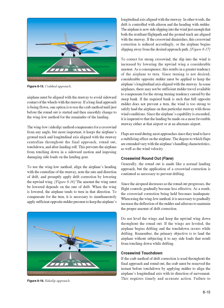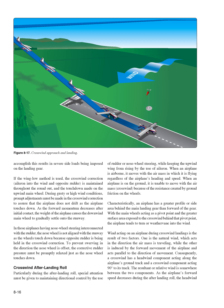Since airspeed decreases as the roundout progresses, the flight controls gradually become less effective, and the crosswind correction being held becomes inadequate. When using the wing-low method, it is necessary to gradually increase the deflection of rudder and ailerons to maintain the proper amount of drift correction. Do not level the wings—keep the upwind wing down throughout the roundout. If the wings are leveled, the airplane begins drifting and the touchdown occurs while drifting. The primary objective is to land the airplane without subjecting it to any side loads that result from touching down while drifting. Crosswind Touchdown. If the crab method is used throughout the final approach and roundout, the crab must be removed the instant before touchdown by applying rudder to align the airplane's longitudinal axis with its direction of movement.